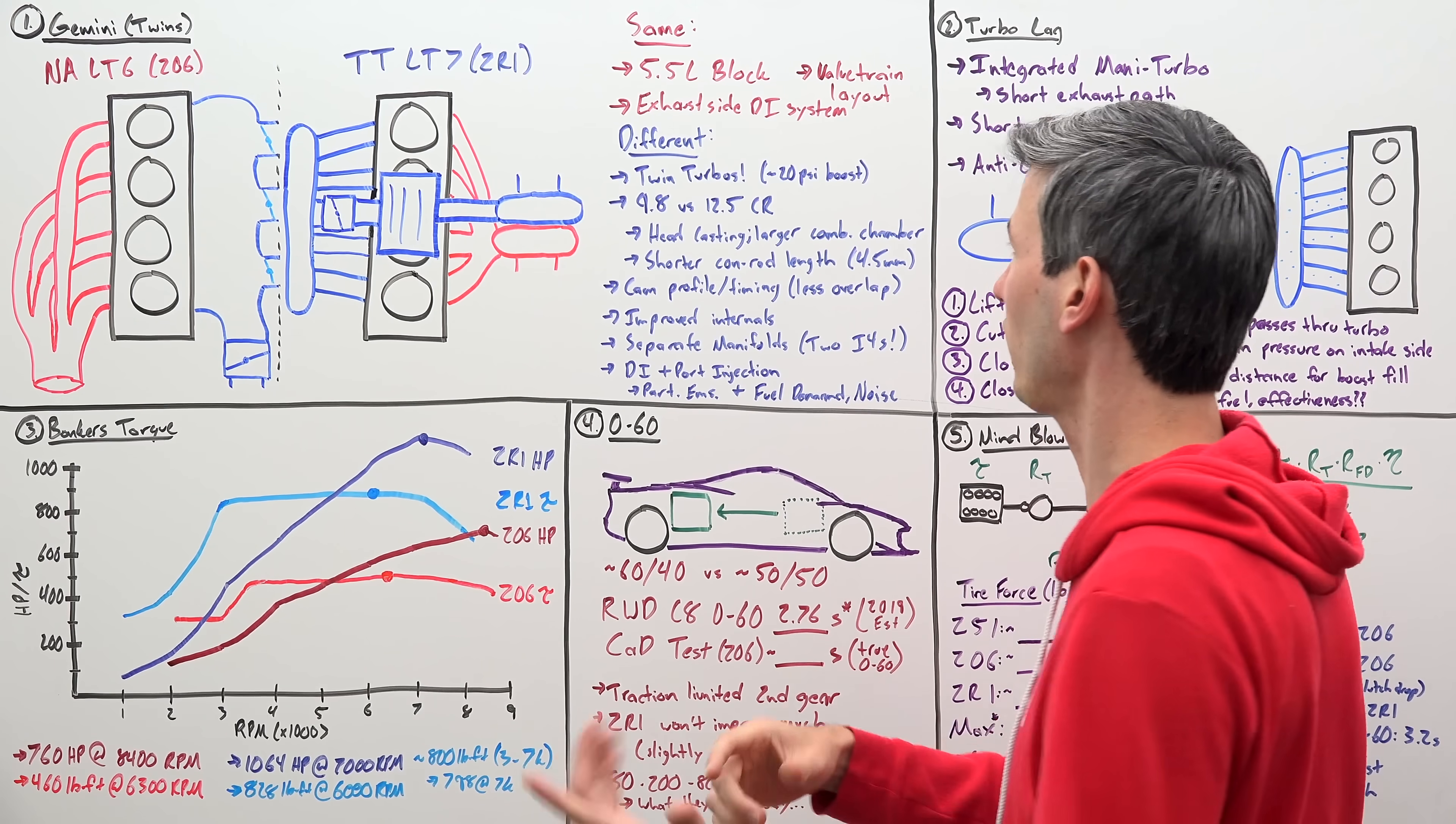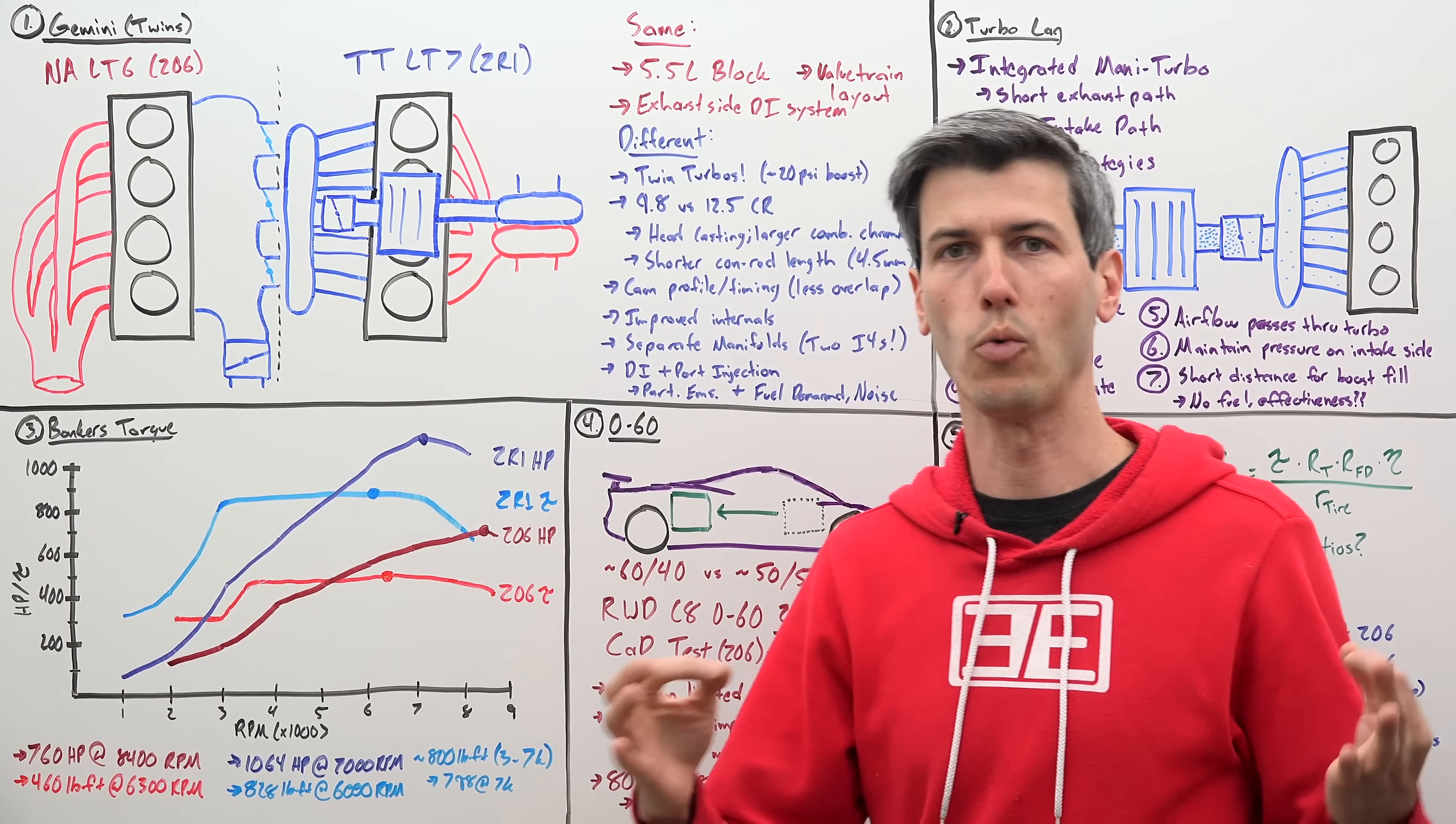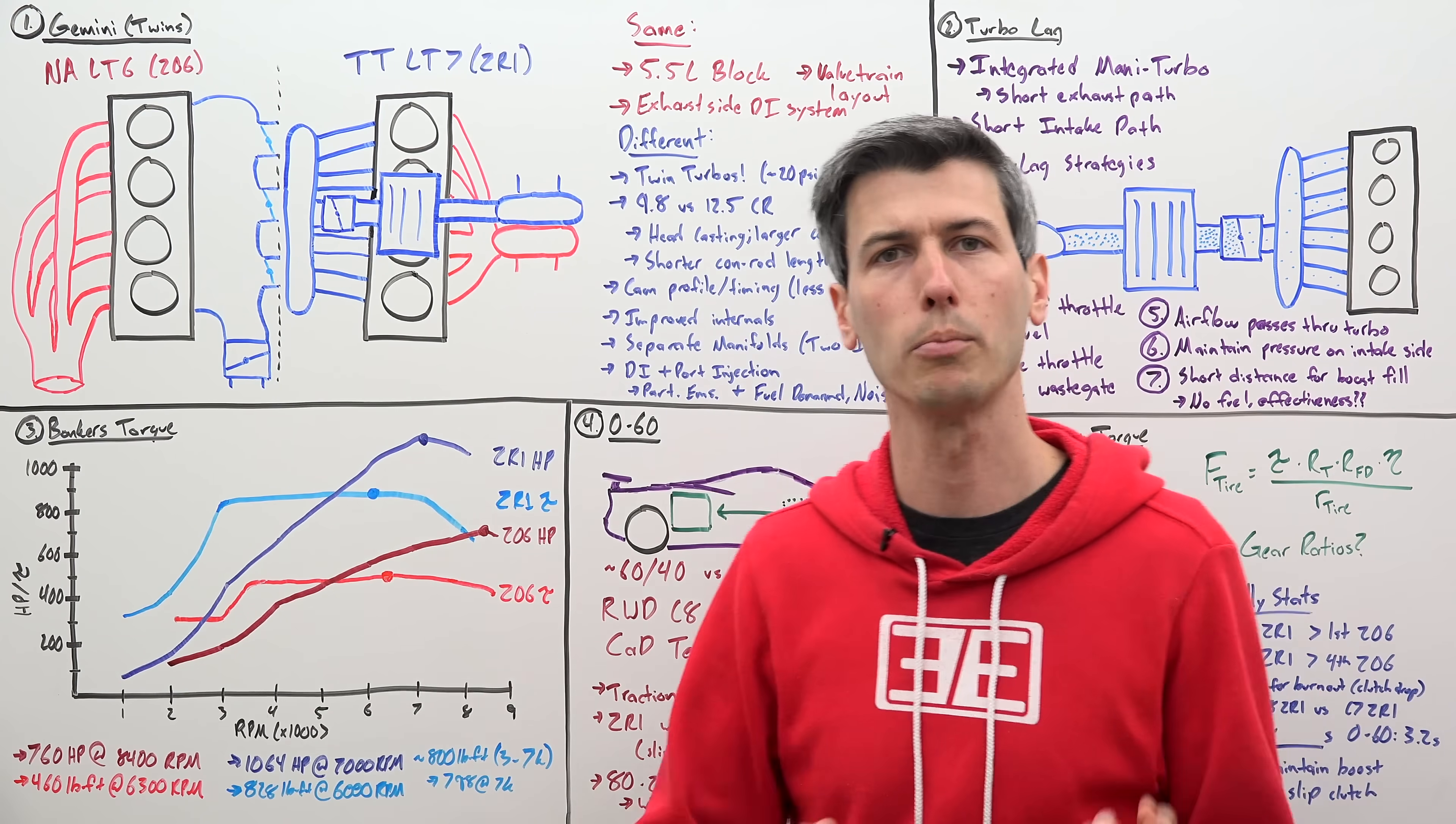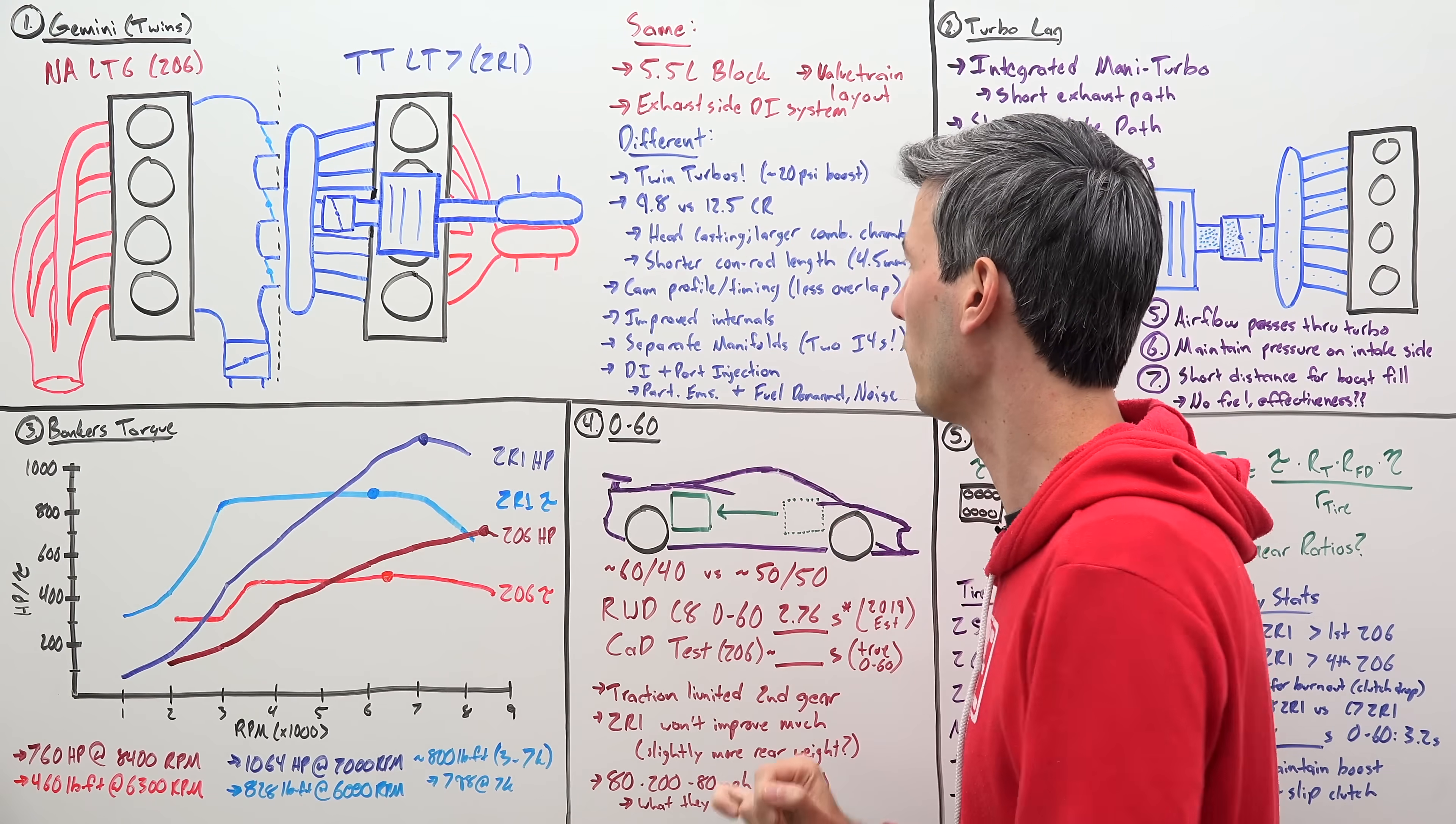So as far as what is the same, it's sharing that 5.5 liter block. You also have the same valve train layout and you have the same direct injection system. Now what is different with this new engine? Well, of course the big change being twin turbochargers running about 20 psi of boost in standard conditions. Now running boost means you're going to want to drop down that compression ratio, so it's been reduced from 12.5 in the LT6 to 9.8 to 1 in the LT7.